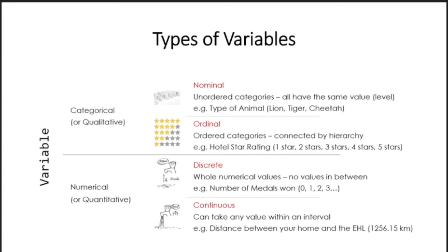For qualitative variables we have two kinds: nominal and ordinal. For nominal, the simplest concept is that all answers hold the same value — no answer is superior and you cannot rank them. For ordinal, you can make a list and sort them according to rating or importance, such as hotel star ratings. On the other hand, for numerical variables, we also have two kinds: discrete, where you cannot have numbers in between — for instance, you cannot have one and a half children.